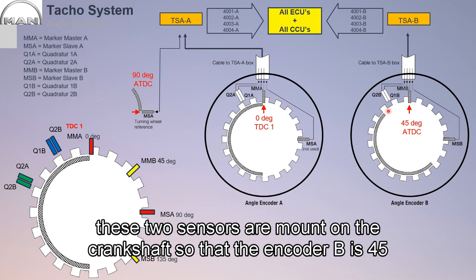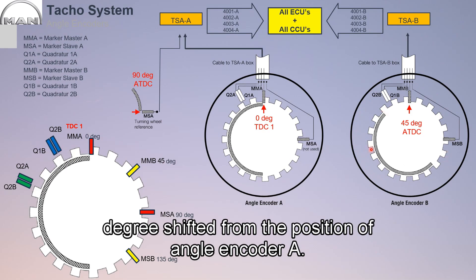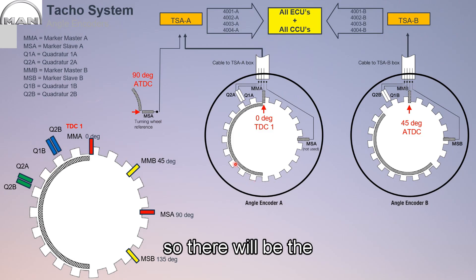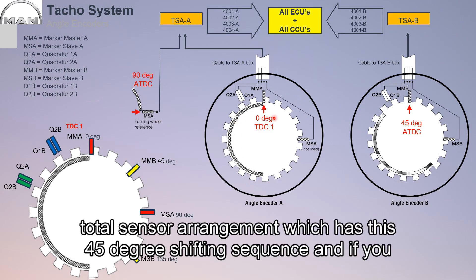These two sensors are mounted on the crankshaft so that encoder B is 45 degrees shifted from the position of angle encoder A. So there will be the total sensor arrangement which has this 45 degree shifting.